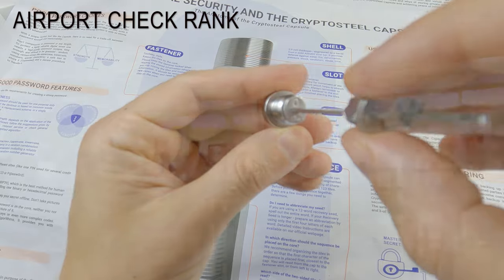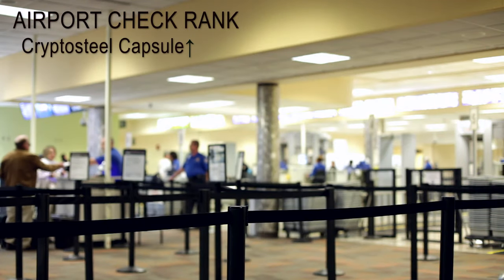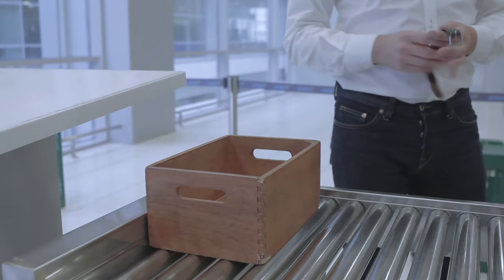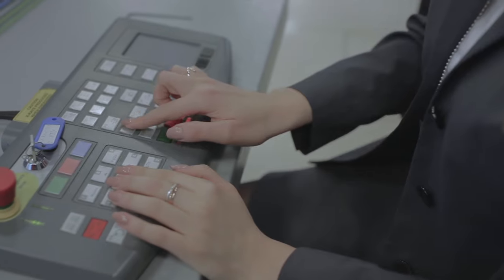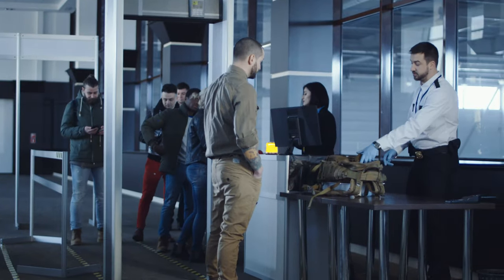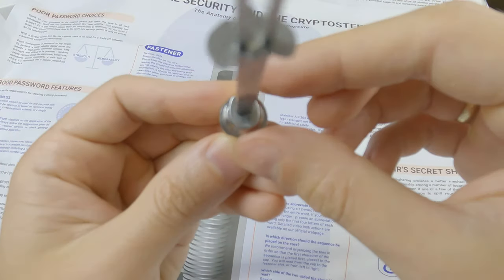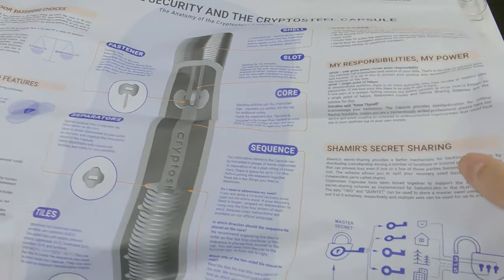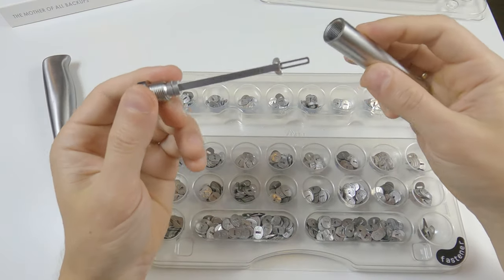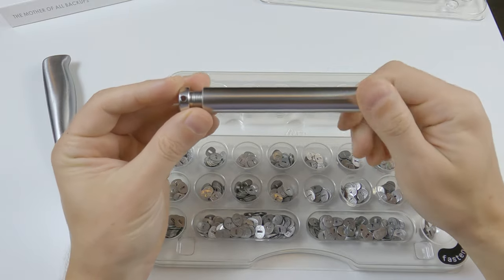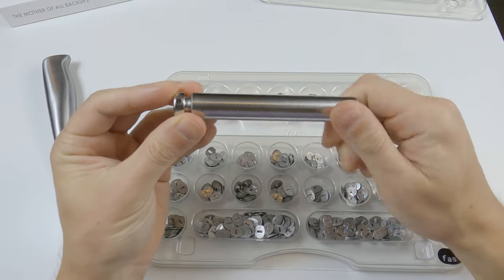Though in my rank of airport check it has one advantage. Suppose you need to pass the security check at the airport. It attracts the officer's attention and they ask you to show it. When you open it, the phrase is not fully exposed like with other devices. The officer will need to slide each tile to uncover the phrase. Besides, you could put dummy letters to fill up the whole core so that sliding won't be possible at all.